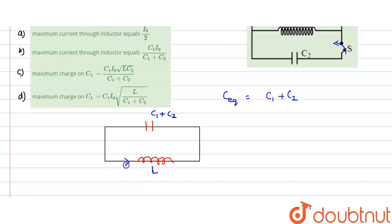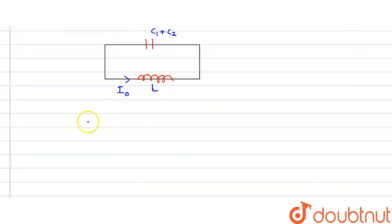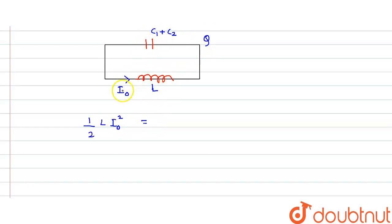The current which was initially flowing through the inductor was I₀. Now this is an LC circuit, so energy and charge will oscillate. The amount of energy carried by the inductor, which is the maximum energy, equals ½L·I₀². Now if the maximum charge built on the equivalent capacitor is Q, this energy equals the maximum energy stored by the capacitor, which is Q² divided by 2·C equivalent.